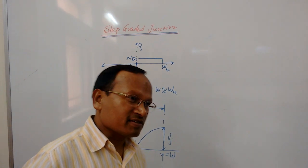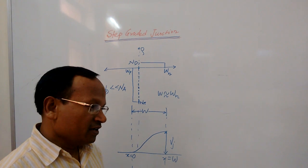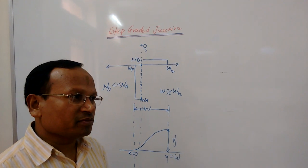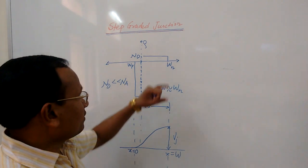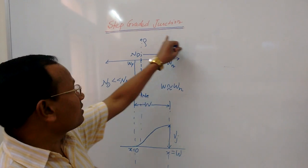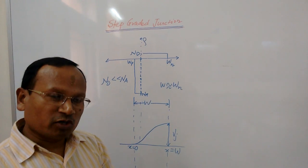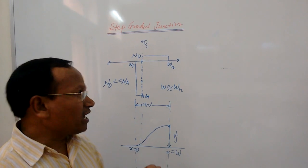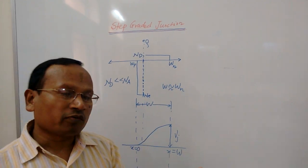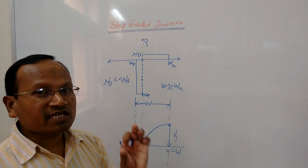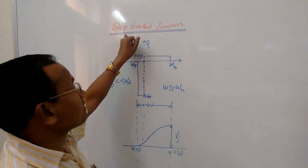We know that there are two types of PN junctions, and this classification is based on the way we apply the doping. Accordingly, there are two types of PN junctions: one is step graded junctions, and the other is linearly graded junctions. If the grading is done in a linear manner, that is called a linearly graded junction. If we go from the P side to the N side and the change in impurity concentration changes abruptly, that comes under step graded junctions.